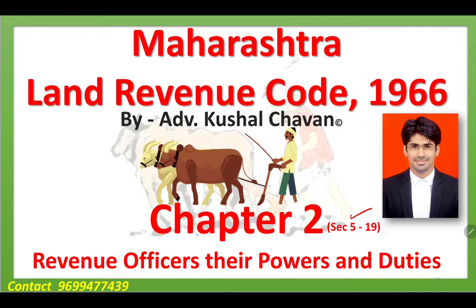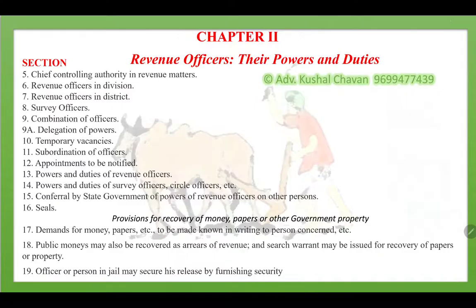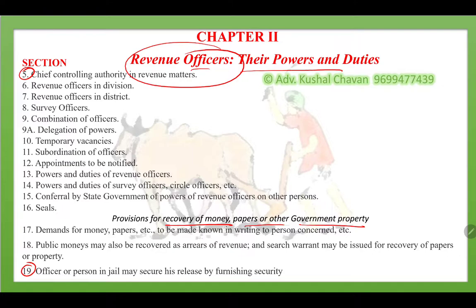This chapter deals with revenue officers, their powers and duties to be performed under this code. Chapter 2 is divided into two parts. Part 1 deals with the powers and duties of the revenue officer. Part 2 deals with the provisions of recovery of money, papers and other government property from the revenue officer — in case they leave the office, retire, resign, or have papers, documents, or money pending that must be returned to the government or relevant person. You can pause the video and go through all the titles before we move to the next slide.